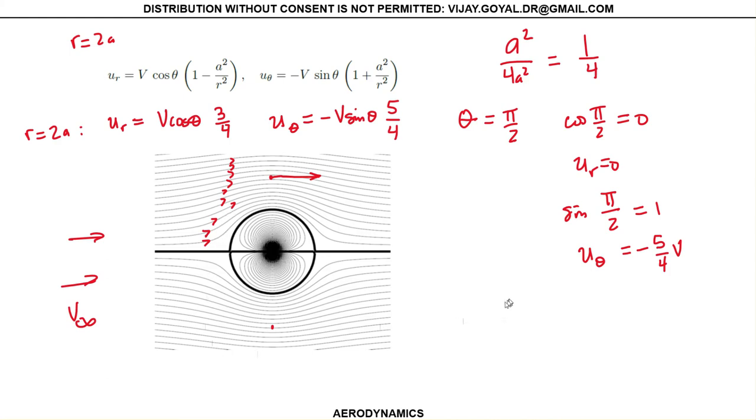Now, if I wanted to check what happens at the bottom here, this flow, look what happens. Minus pi over 2. So again, cosine of pi over 2 is equal to 0, and U_r is equal to 0.